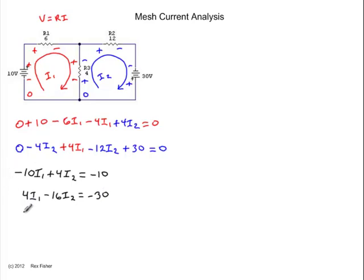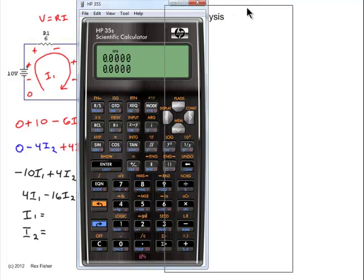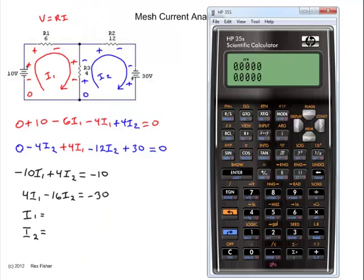Our goal is to find I1 and I2. And to do that, let's use a calculator that's recommended for this course. It's an HP 35. If you don't have one like this, at the end of the video are some resources where you can watch other videos on how to solve a system of equations or even use an online calculator to do it. In this case, we're going to go to the equation menu, scroll down to the solver for two equations and two unknowns, that 2 by 2 linear solver.